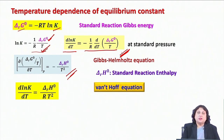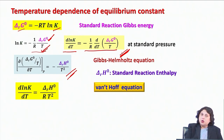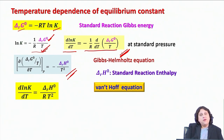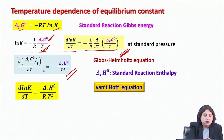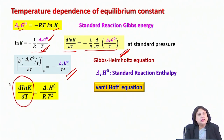This famous equation is known as the Van't Hoff equation. It is in differential form: for a chemical equilibrium mixture at temperature T, if the temperature changes by dT, the equilibrium constant changes by an infinitesimal amount. The quantity d(ln K)/dT has delta_R H naught in the numerator and R T² in the denominator.